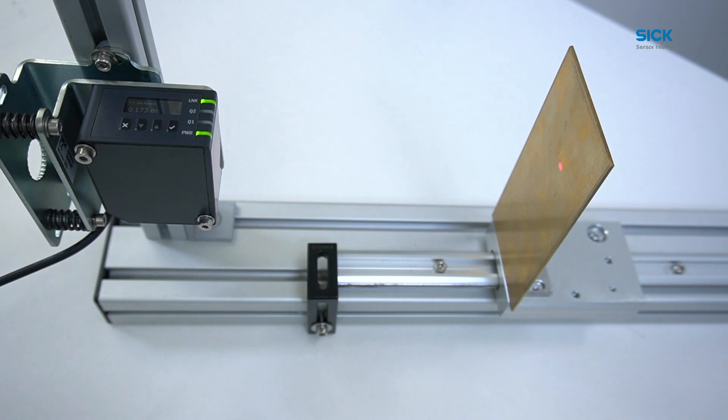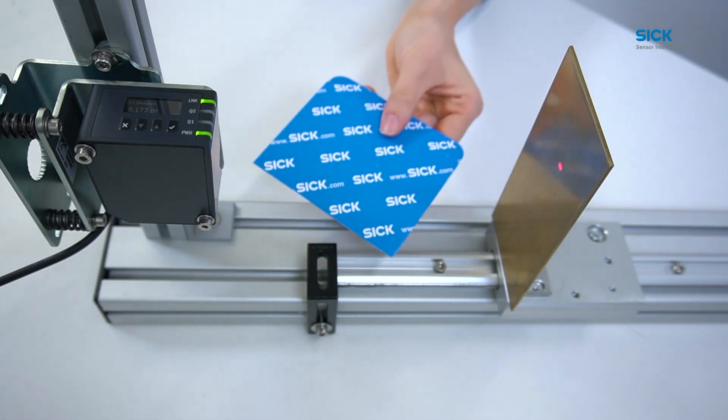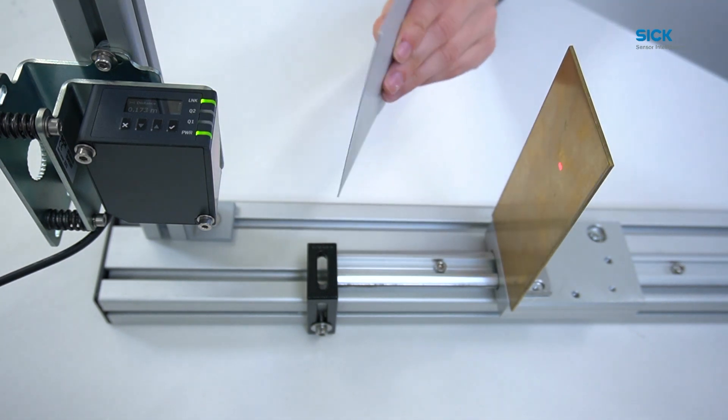To swiftly showcase the remarkable accuracy of the DD80, let's attempt to detect this carton with a thickness of 2 mm. To ensure the utmost precision in the DD80's measurements, we will use the quick setup.